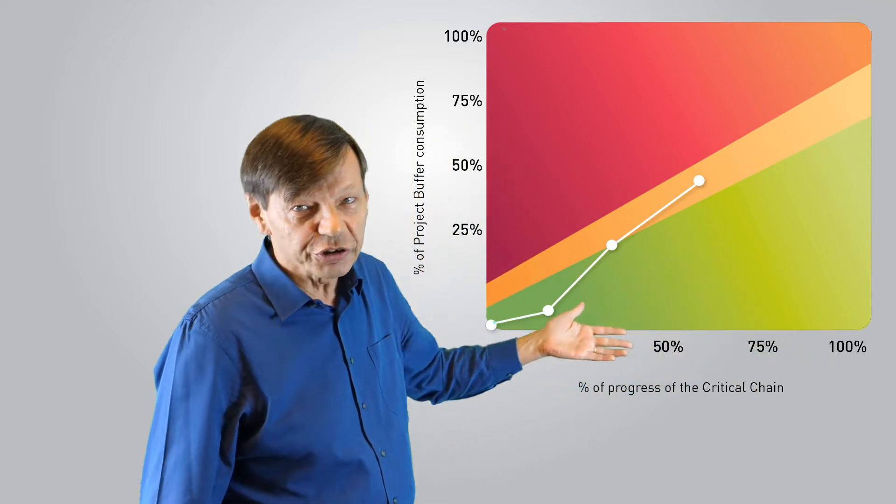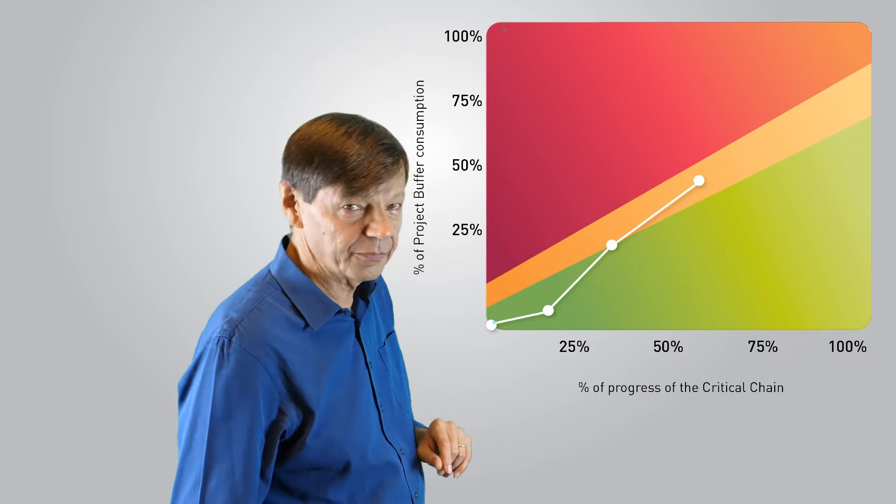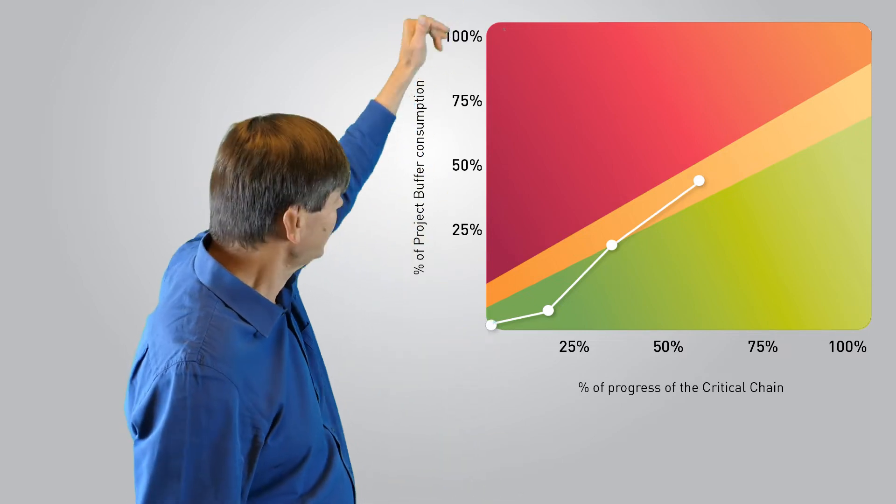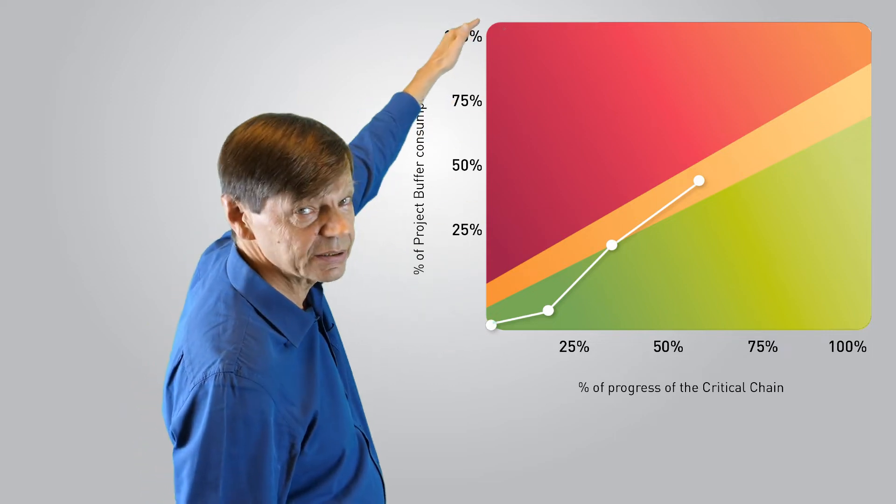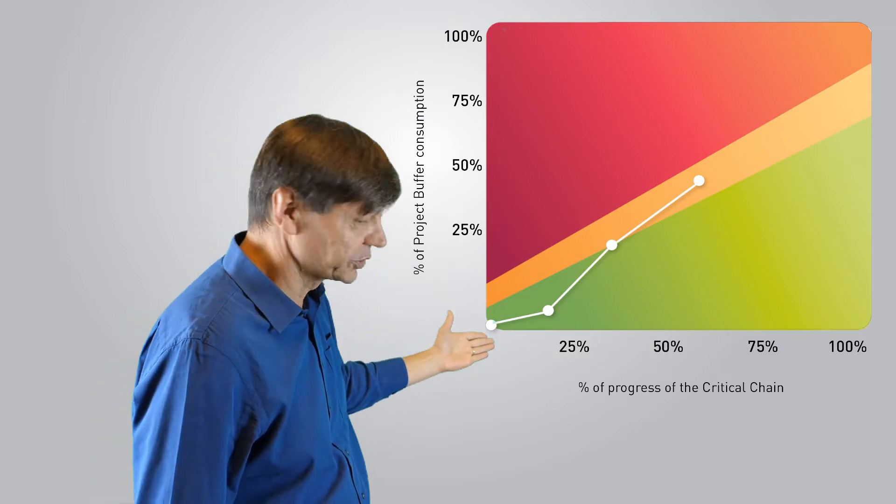It's measured on the critical chain, which is the close cousin to the critical path, and then we have on the vertical axis the buffer consumption from 0% to 100%.